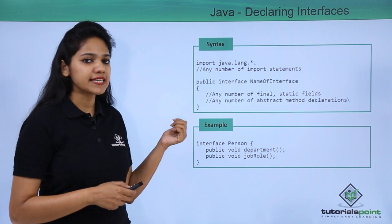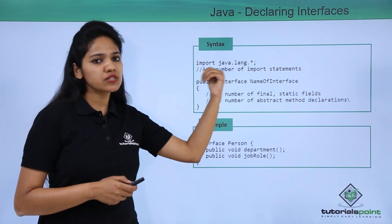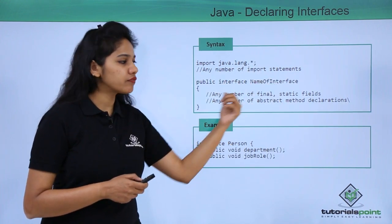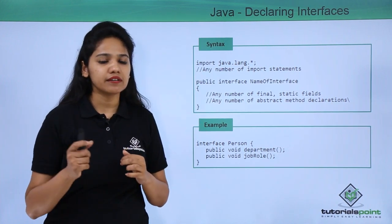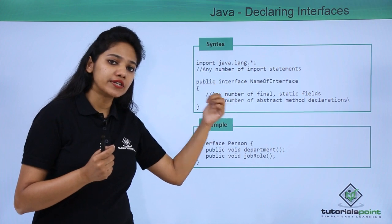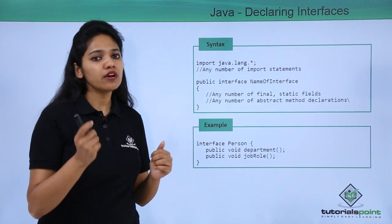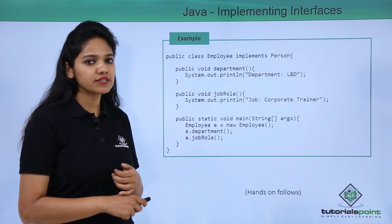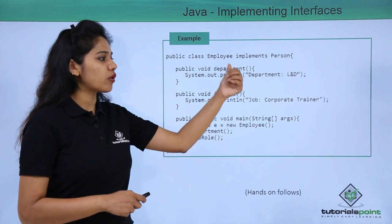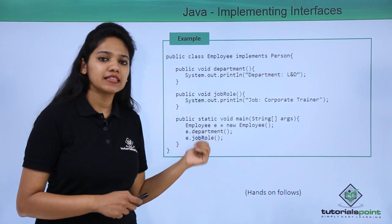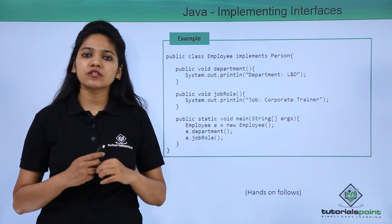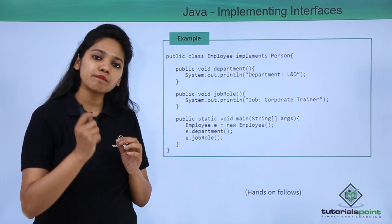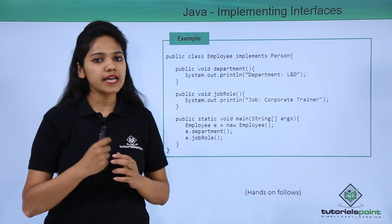Here is the syntax: you declare the package, then write the interface keyword followed by the interface name. Inside the brackets you declare the methods, and any method declared in an interface is by default abstract. We have created an example of a Person interface with certain methods, and an Employee class that implements this interface and defines each of its methods. Let us execute this program to understand how to create an interface and implement it.